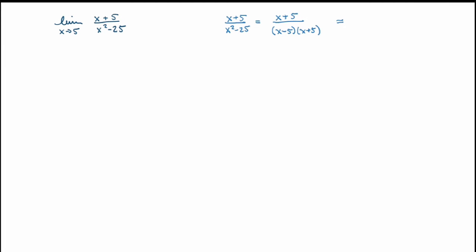If x is not equal to −5, I can divide both numerator and denominator by (x+5), and I'll get a simpler expression. So the function equals 1 over (x−5), but that's only true if x is not equal to −5 or 5, where the function is actually undefined at these two points.